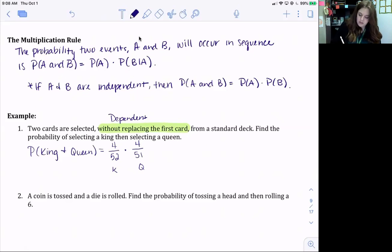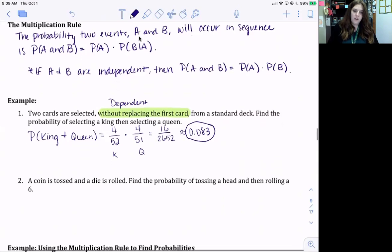Okay, so we can multiply straight across with our fractions. 4 times 4 is 16, and 52 times 51 is 2,652. And then go ahead and divide, and if we round, we get 0.083.